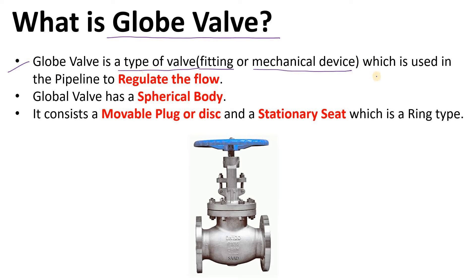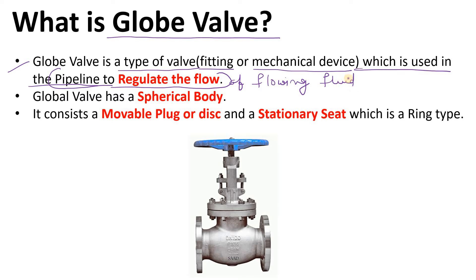A globe valve is a type of valve used in a pipeline to regulate the flow of flowing fluid. In the gate valve, it is used for on-off purposes, but in the case of the globe valve, it is used to regulate the flow. That is a very important point which you must note.